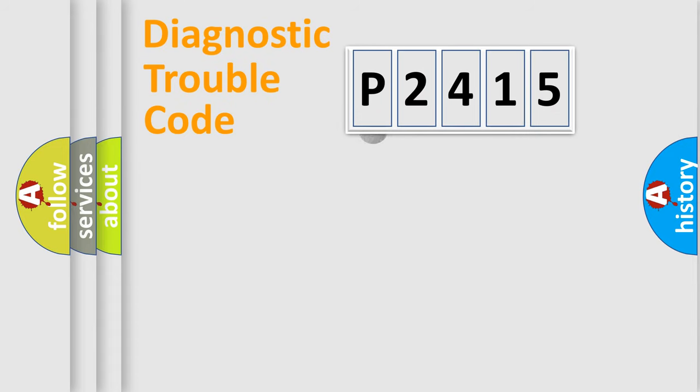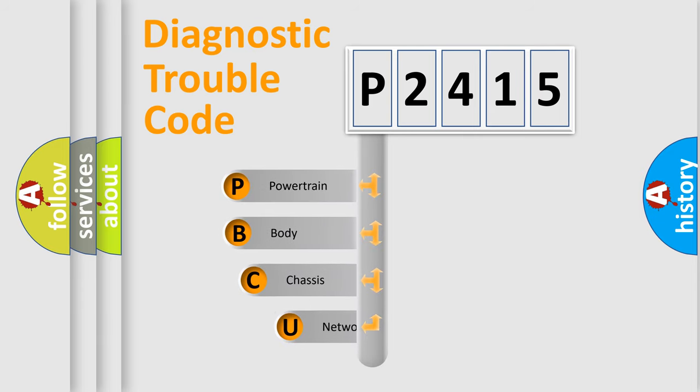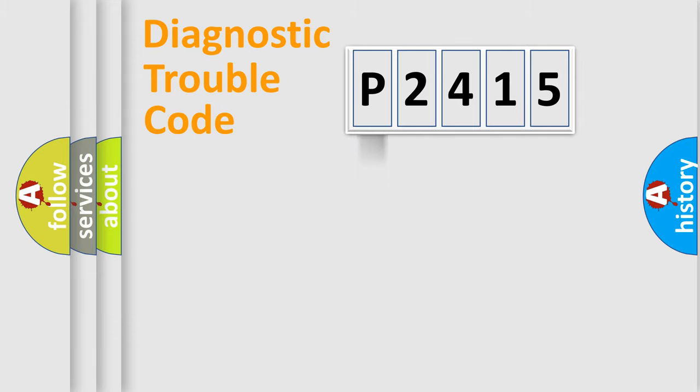First, let's look at the history of diagnostic fault code composition according to the OBD2 protocol. We divide the electric system of automobile into four basic units: powertrain, body, chassis, and network. This distribution is defined in the first character code.